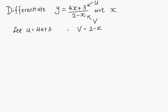We start off by finding the derivatives of u and v — that is, to differentiate u and v. So du/dx equals 4, and dv/dx equals negative 1.